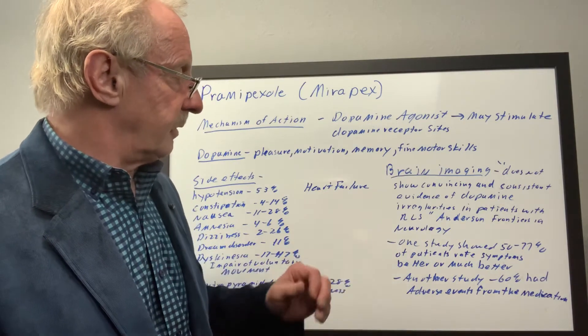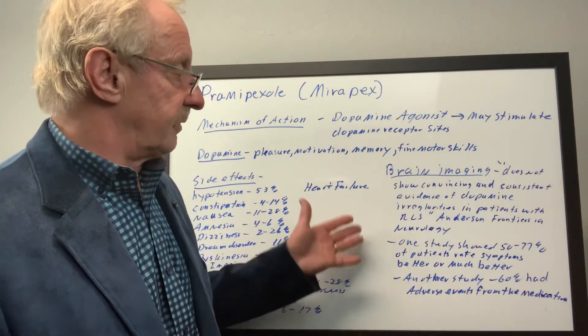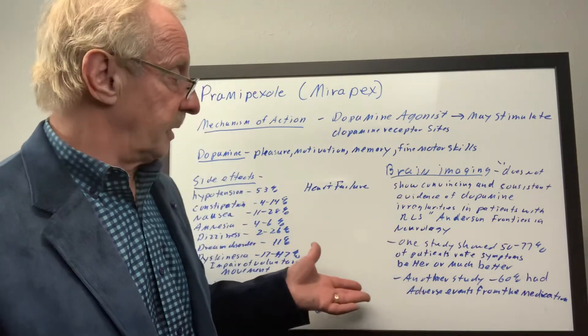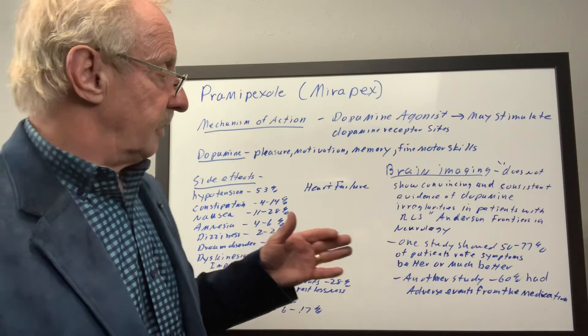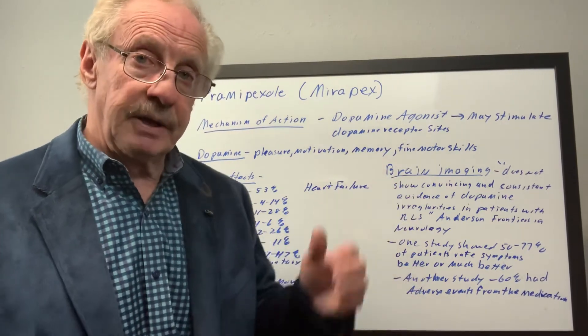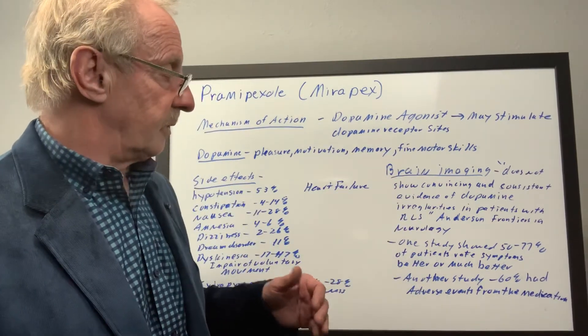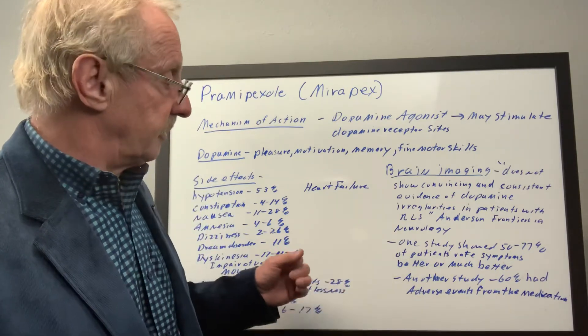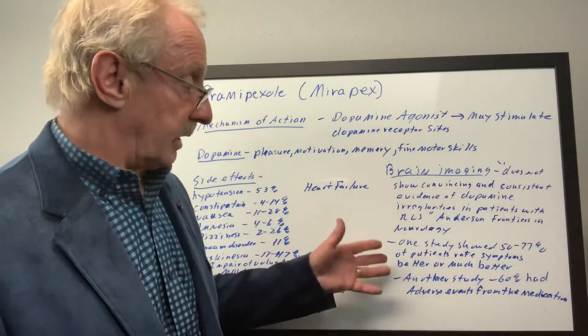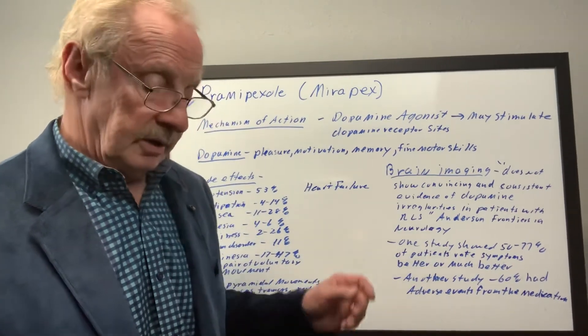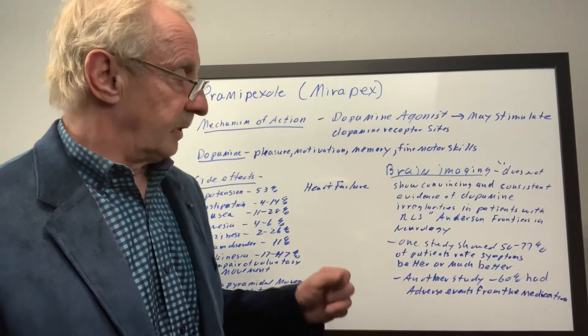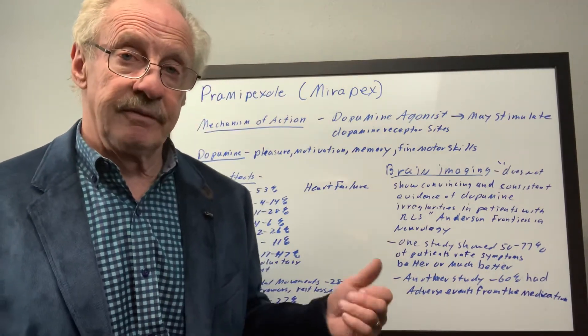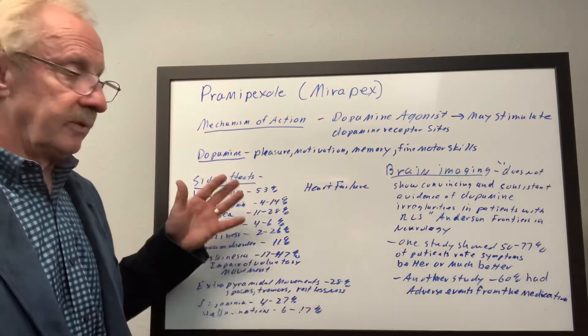Also, another study showed that in terms of success rate, there's about a 50 to 77 percent chance that people that take the medication are going to report better or much better response, or alleviation or reduction of the restless leg symptoms. But yet, to counter that, another study that we found, again in our research paper, mentioned that 60 percent of people had an adverse effect or event, meaning they had one of these things going on.